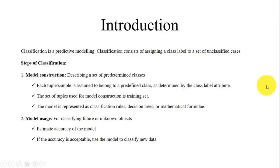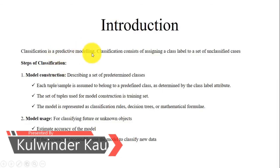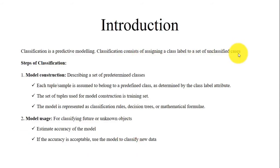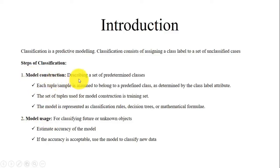Classification is basically predictive modeling. It consists of assigning a class label to a set of unclassified cases or instances. Classification basically consists of two steps: the first one is model construction and the second one is model usage. Model construction is basically a set of predefined classes describing a set of predefined classes.